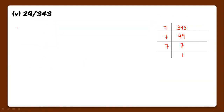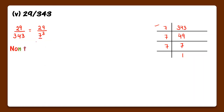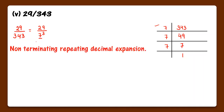Now 5th part: 29 upon 343. They are co-prime numbers — their HCF is 1. Now we will do the prime factorization of 343. We can write 343 as 7 raised to the power 3. Now you can clearly see that there is a power of 7 in the denominator, so it is a non-terminating repeating decimal expansion.